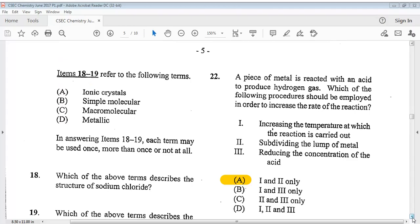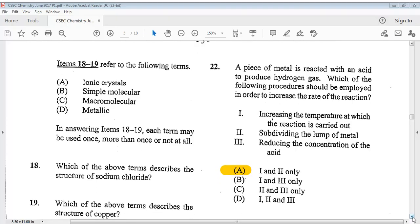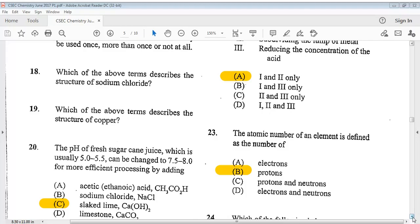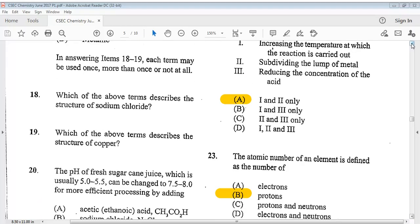Question 18. Items 18 to 19 refers to the following terms. A, ionic crystals. B, simple molecular. C, macromolecular. And D, metallic. In answering items 18 to 19, each term may be used once, more than once, or not at all. Question 18, which of the above terms describes the structure of sodium chloride? The answer is A, ionic crystals. Question 19, which of the above terms describe the structure of copper? The answer is D, metallic.